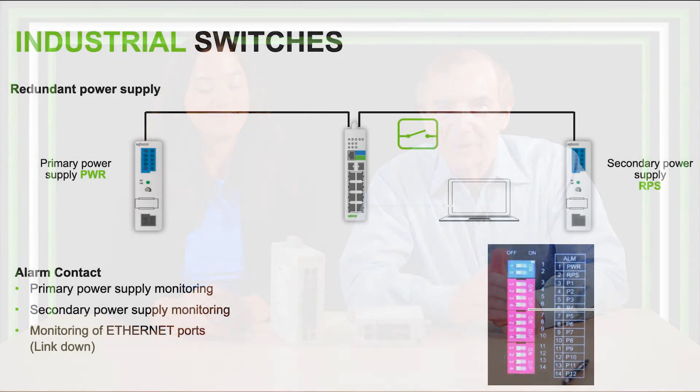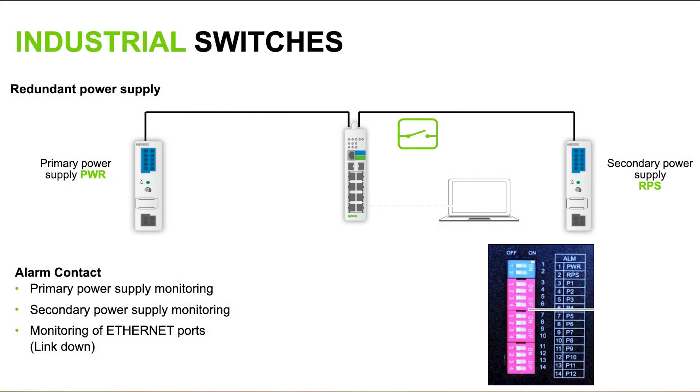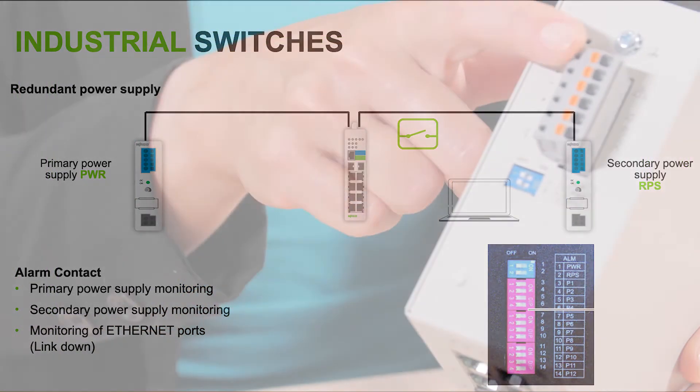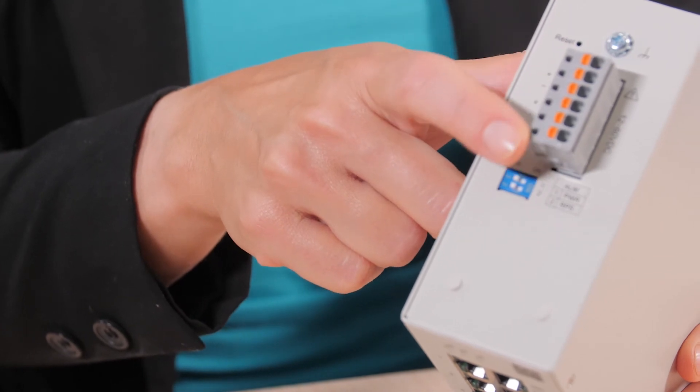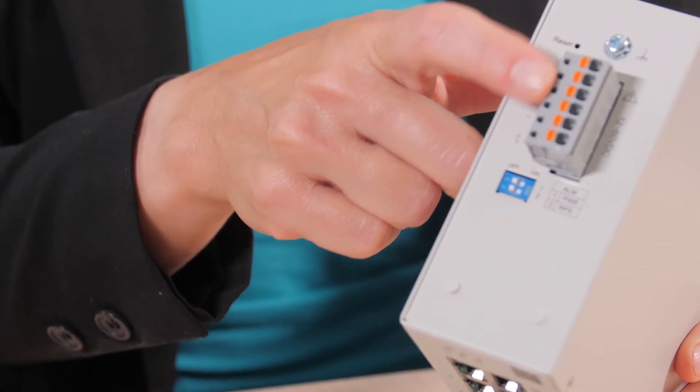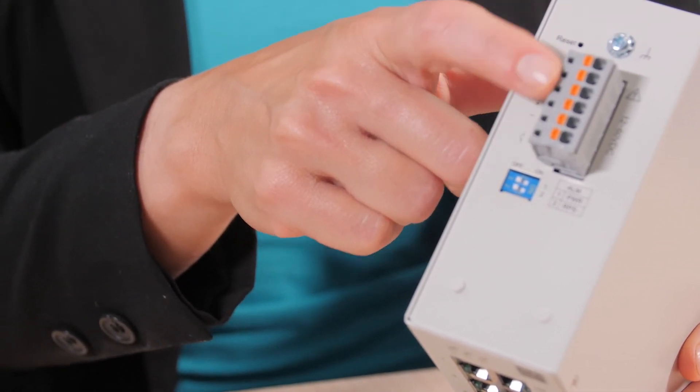WAGO lean managed switches also accept two different power supplies, a primary and a secondary, and can trigger alarm relays if one should fail. The alarms are set through DIP switches located near the power connections. Ethernet switches can keep operating should one power supply fail, but it will let a plant operator know of the issue.